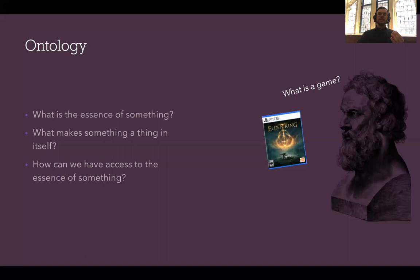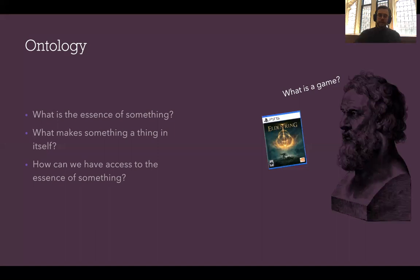So ontology helps us to think about things but doesn't necessarily help us to reproduce them in a coherent manner. To recap: ontology is about things in themselves, and ontological approaches try to figure out the essence of a thing — what is a game?